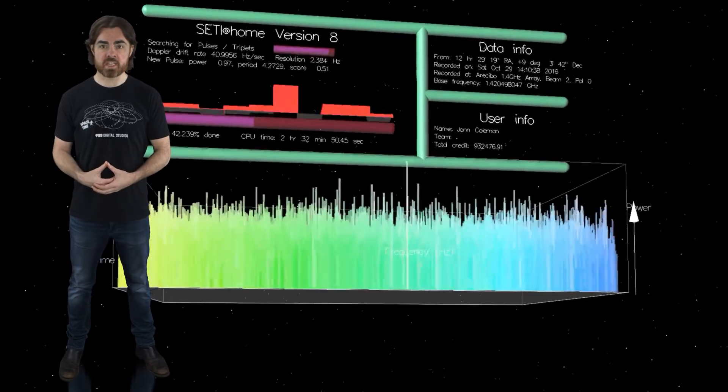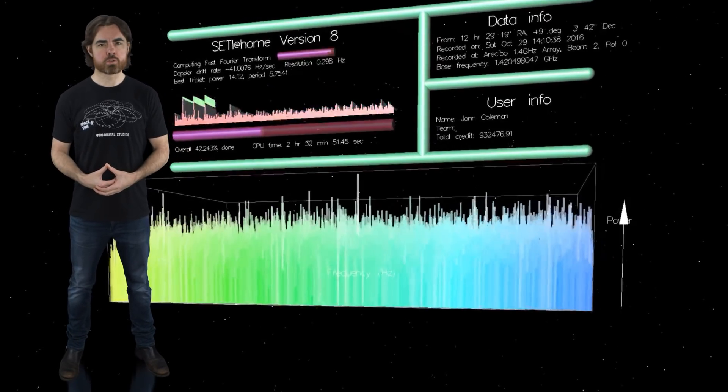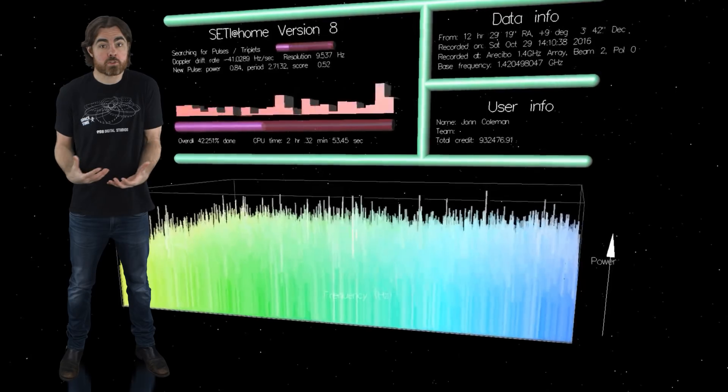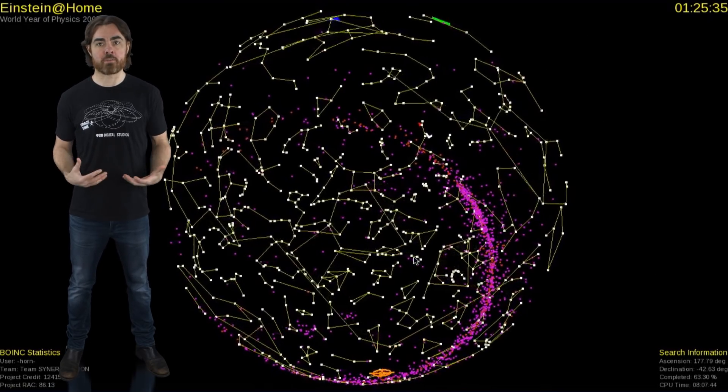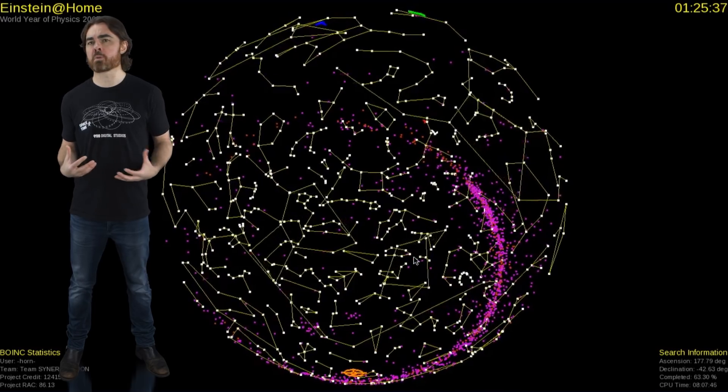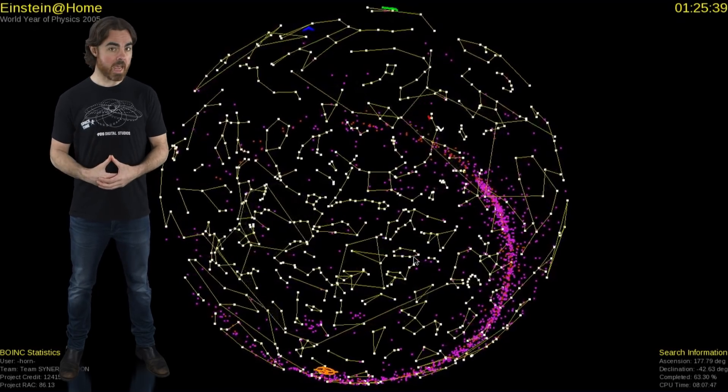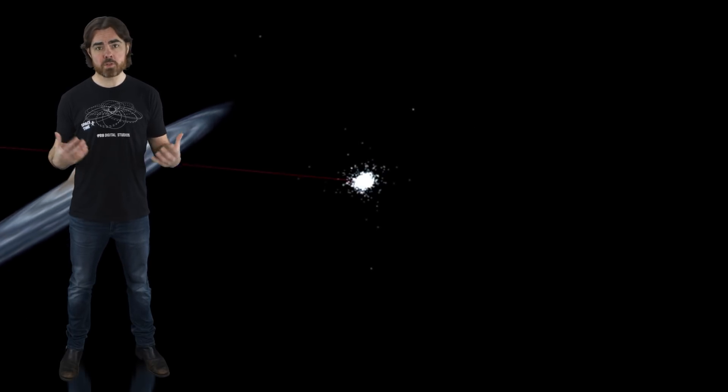This all started with the SETI at home program, which looks through radio data for signs of signals from intelligent life. But there's also Einstein at home, which searches for LIGO gravitational wave data for signals produced by rotating neutron stars, and Milky Way at home, which generates 3D dynamical models of streams of stars using data from the Sloan Digital Sky Survey. So if you can spare a few of them computer cycles, why not do some science with them?